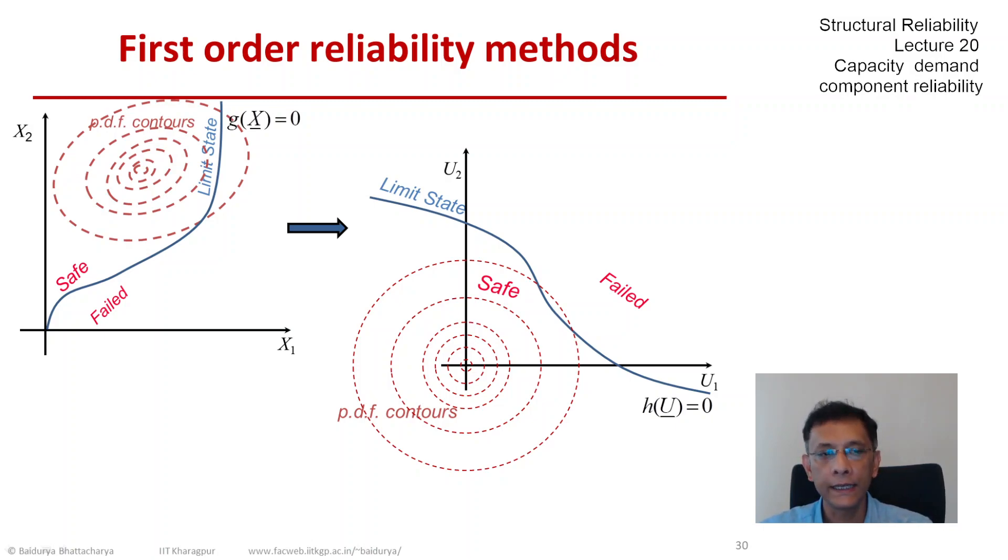Now u is our space of independent standard normal variables, and from x we have mapped to u. The limit state is now h. But what is very interesting is that the pdf contours in this u space are concentric circles centered on the origin.